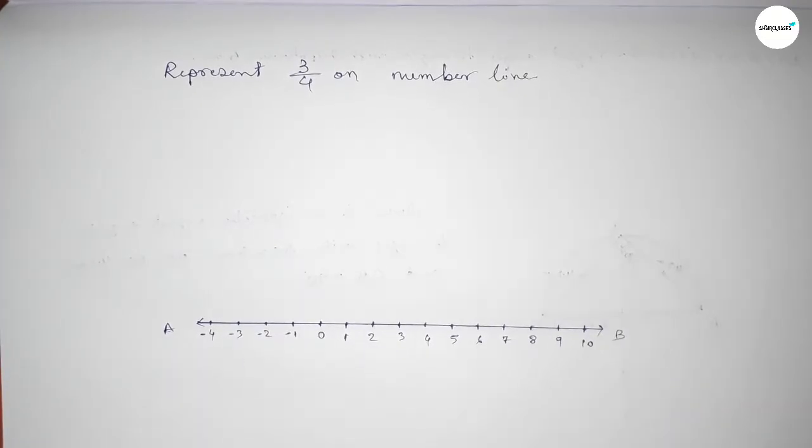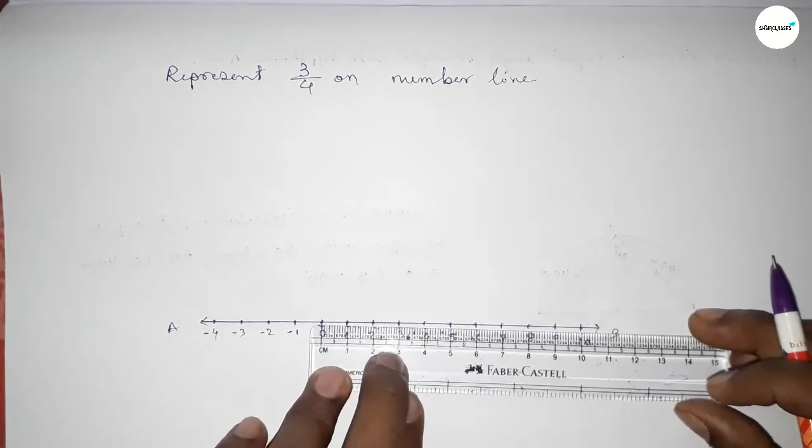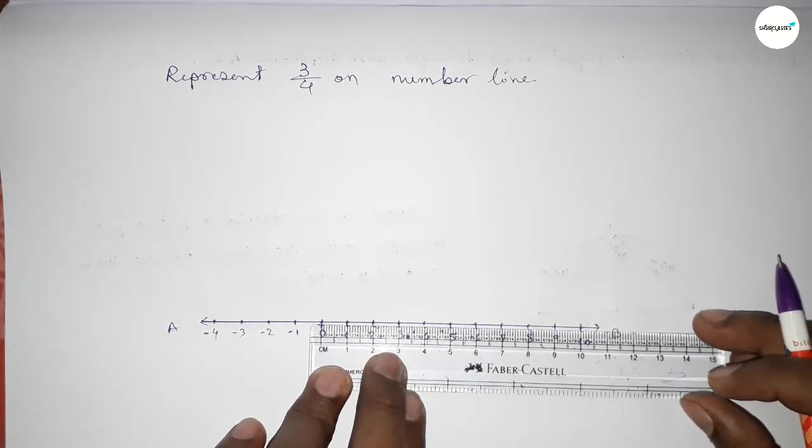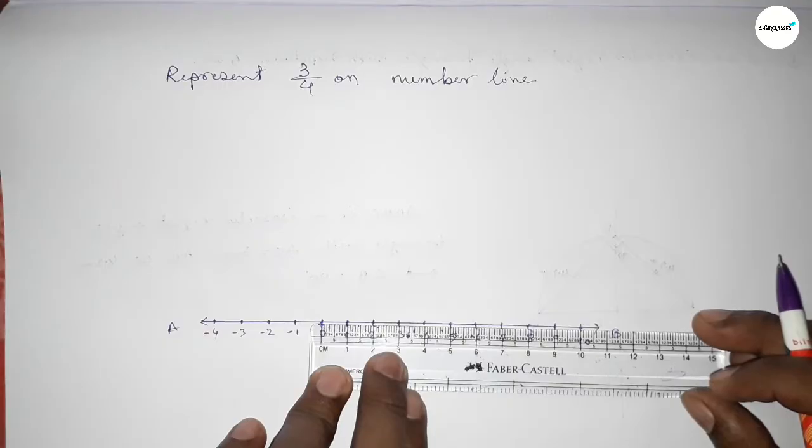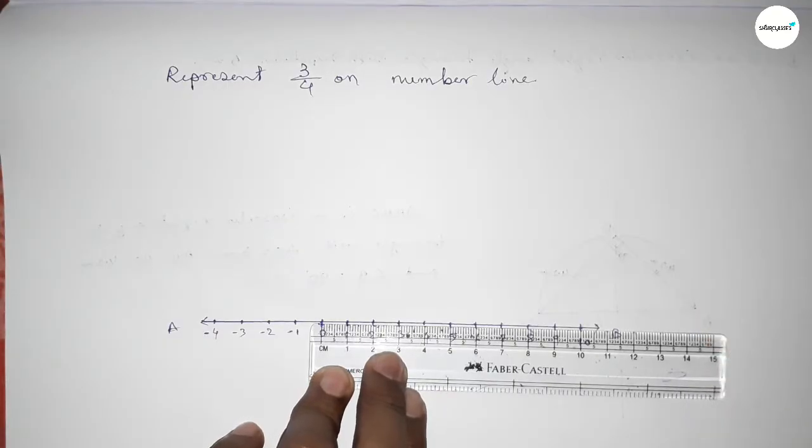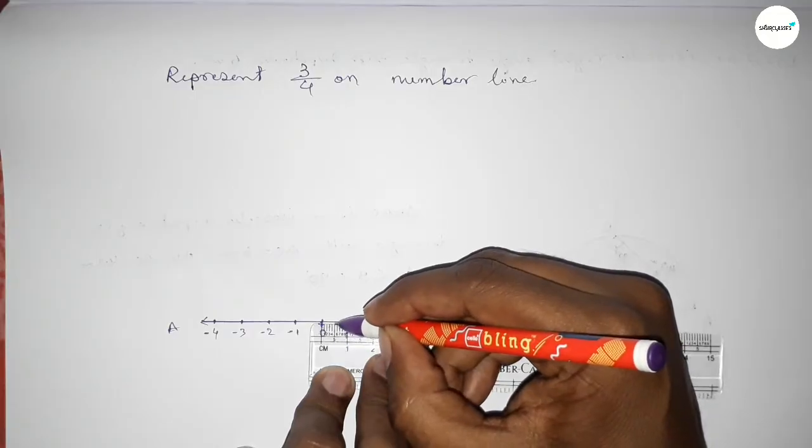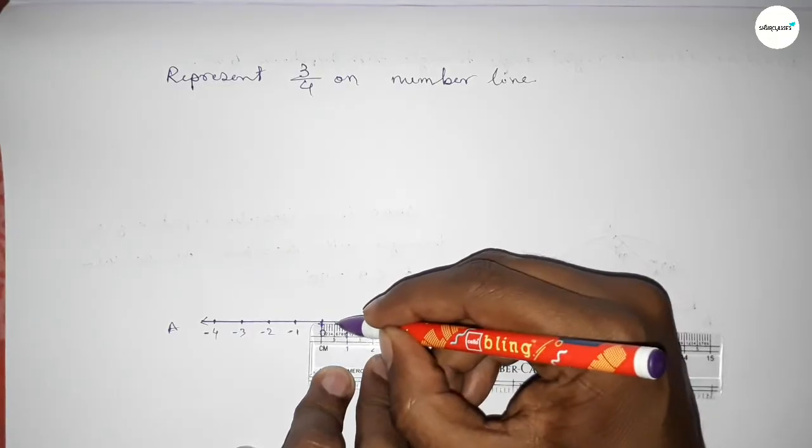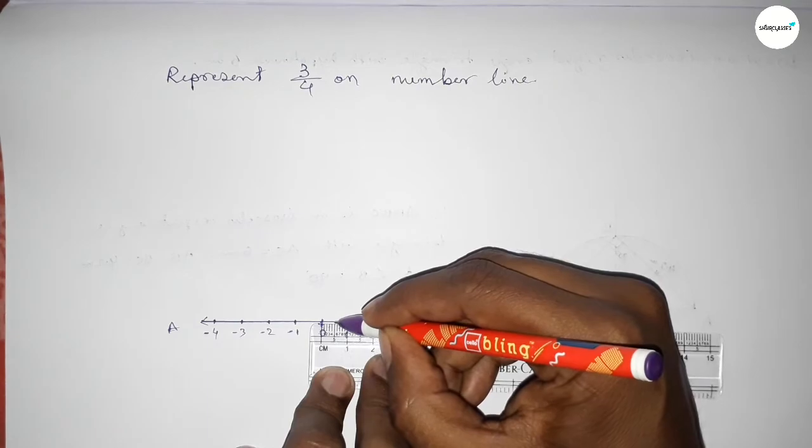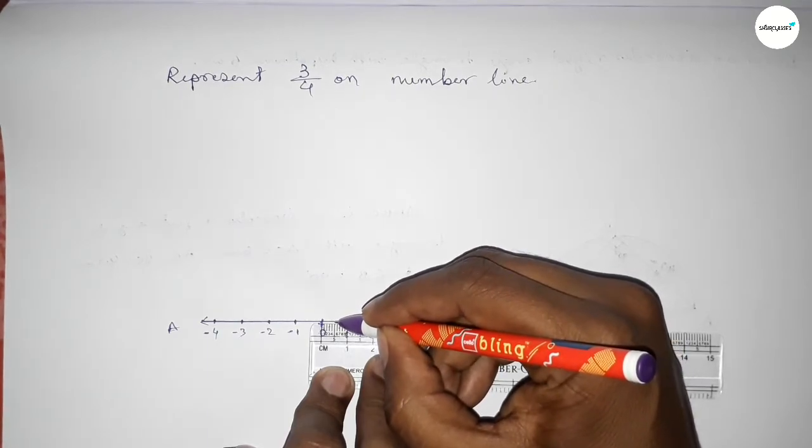Now taking points A and B. We have to divide the distance between 0 to 1 into 4 equal parts. So first divide the distance between 0 to 1 into 2 equal parts. This is the half between 0 to 1. Then divide the distance between 0 to 0.5.